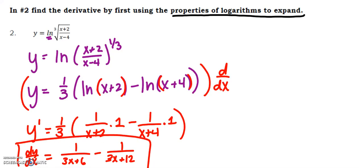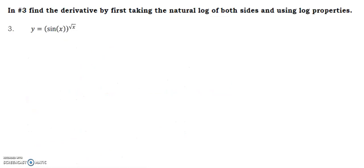Number three: find the derivative by first taking the natural log of both sides and using log properties. The reason I know I need a natural log of both sides is because I have some function that is being raised to another function. I know how to deal with a base varying and the exponent being constant. I will soon learn how to deal with the base constant and the exponent varying. Right now I have something similar to x to the x where I've got two things that are varying - both the base and the exponent.